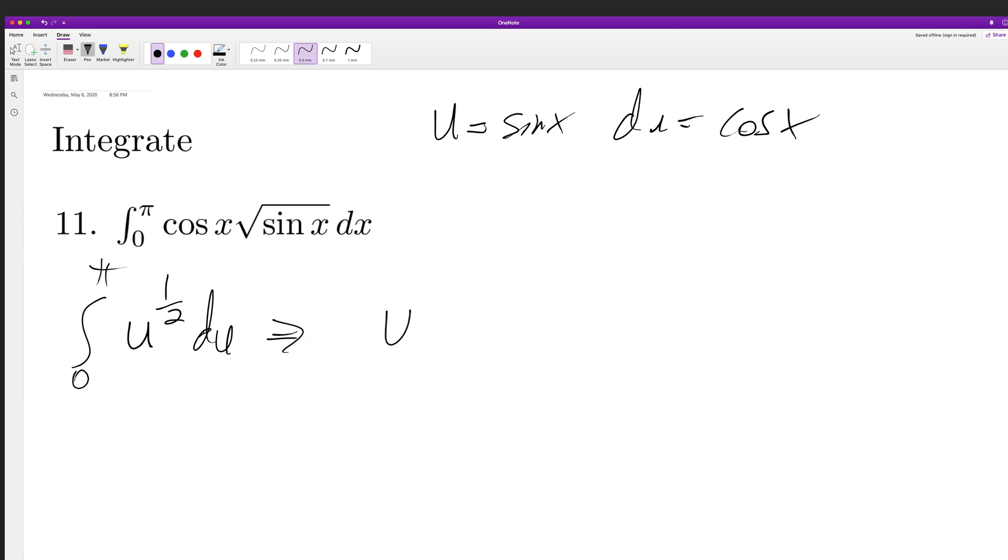So we're going to add one to this. It becomes u raised to three halves divided by three halves, which is the same thing as two thirds.